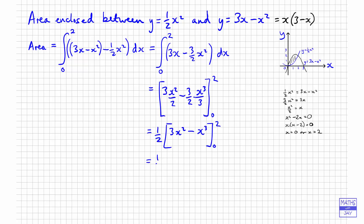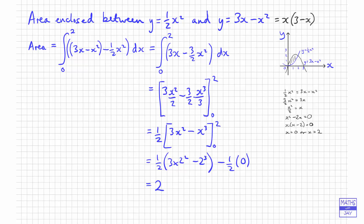Substituting in x equals 2 gives us a half times (3 times 2-squared minus 2-cubed). Substituting in 0 gives 0 for both terms. So we have 3 times 4 is 12, take away 2-cubed which is 8, giving 12 minus 8 equals 4, then 4 divided by 2 equals 2. So the area enclosed between the two curves is 2 square units.